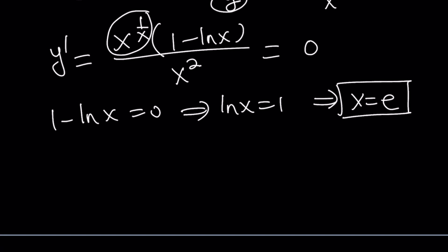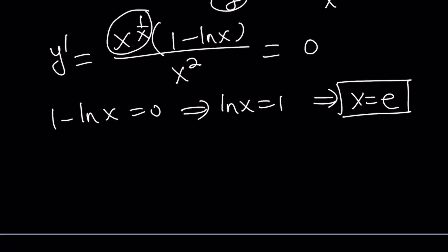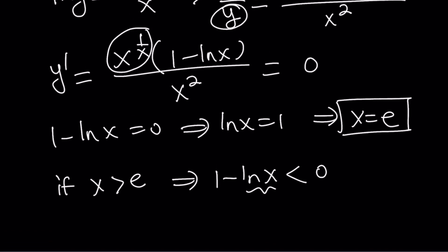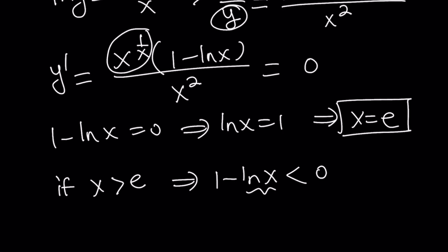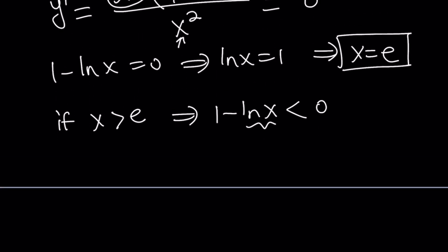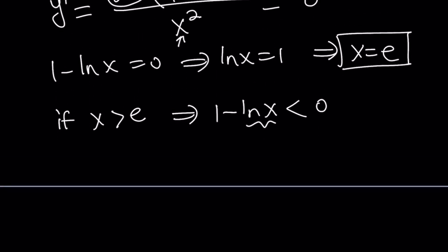So what am I going to do with this? I'll make a table. But first of all, notice that if x is greater than e, then 1 minus ln x is going to be less than 0, because it's going to be greater than 1. So that's going to make the derivative negative, because that's the only thing that changes. These are always positive, because x squared is at the bottom. So x cannot be 0 anyways. The only thing that changes is this one.